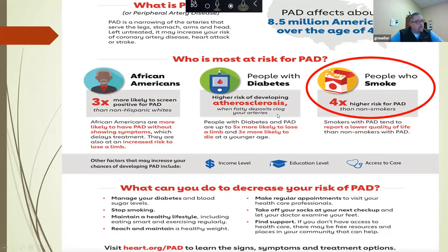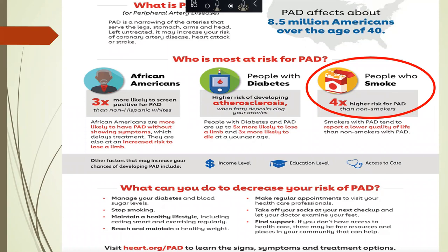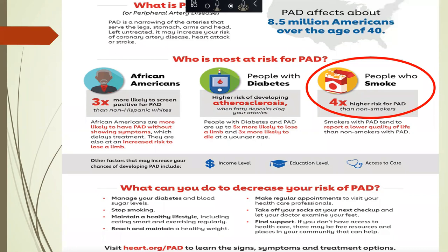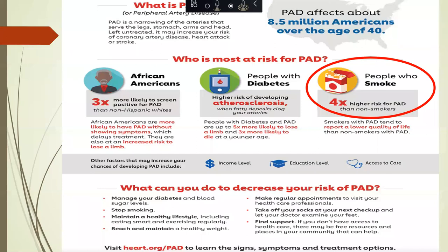Peripheral arterial disease affects about 8.5 million Americans over the age of 40. Those who are most at risk — African Americans — are three times more likely to have a positive screen for peripheral arterial disease compared to their non-Hispanic white counterparts. Those with diabetes, and those that smoke, are four times higher at risk for developing peripheral arterial disease than those that do not smoke.